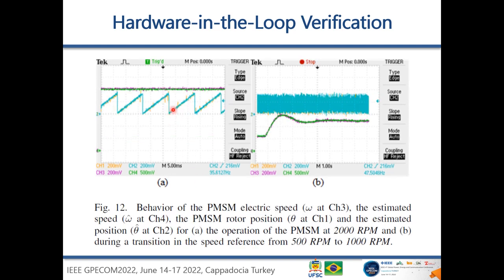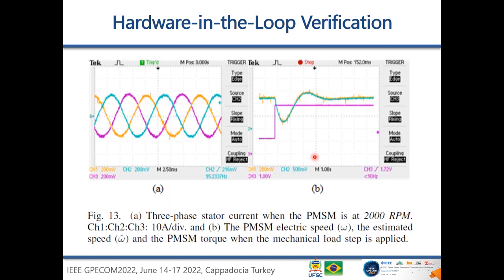Another result shows the same quantities at 2000 rpm. Then we have speed reference transitions from 500 to 1000 rpm, where the estimated speed follows the actual speed as well as the rotor position. Another result shows a torque change: the speed is constant before and after the transition but there is a transient, and the estimated speed remains coincident with the real speed even under a change in mechanical load. Finally, the three-phase stator current at 2000 rpm in steady state confirms the current quality.